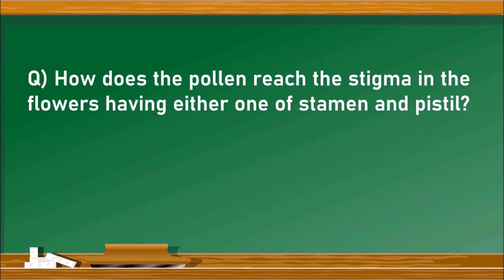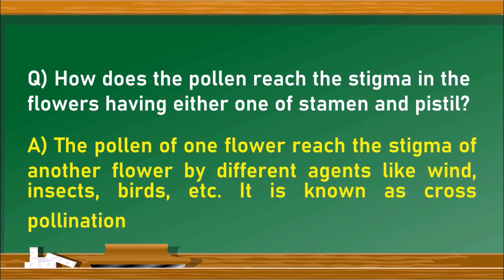Next question: how does pollen reach the stigma in flowers having either only a stamen or only a pistil? Such flowers are called unisexual flowers. The pollen of one flower reaches the stigma of another flower by different agents like wind, insects, and birds. This is known as cross-pollination, and hence in unisexual flowers, cross-pollination takes place.